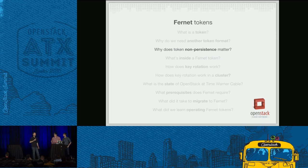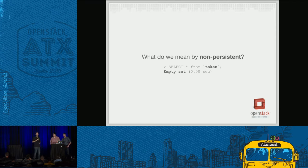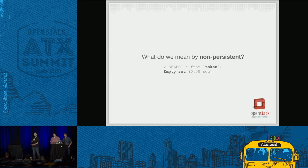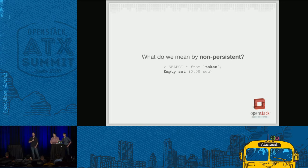So why does non-persistence matter? If you've operated Keystone at scale, you've probably learned very quickly that your token table gets very large and Keystone grows slower and slower. For a long time it was documented that you need to purge your token table periodically. Eventually we implemented a command called token flush to help you do that on a cron job. But if you have 24 hours worth of tokens in your table, it's still big and still slow. If you're actually using Fernet, your token table is empty — tokens do not need to be persisted at all. When you authenticate with Keystone, there's actually no write operations anywhere — we just generate a token and send it back.